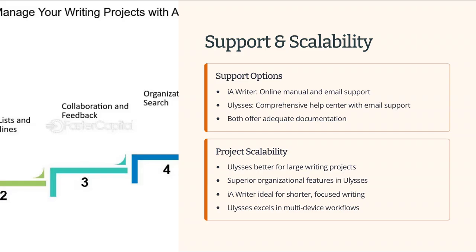IA Writer has a comprehensive online manual and email support, while Ulysses offers a thorough online help center along with email support. In terms of scalability, Ulysses' organizational features and integration with Apple's ecosystem make it more suitable for large writing projects or for those who work across multiple devices.